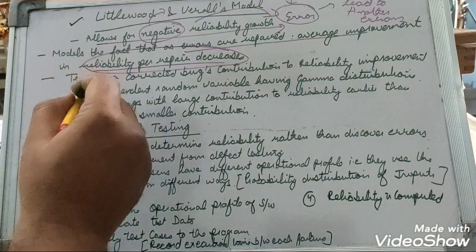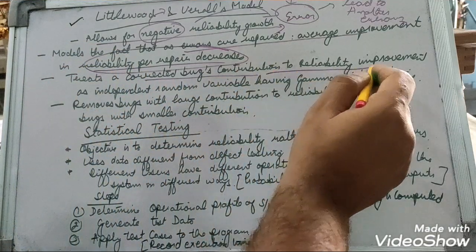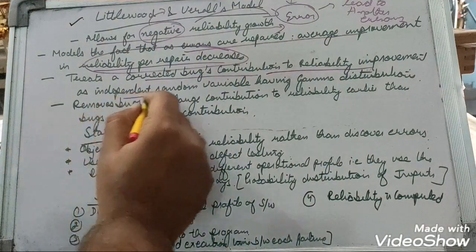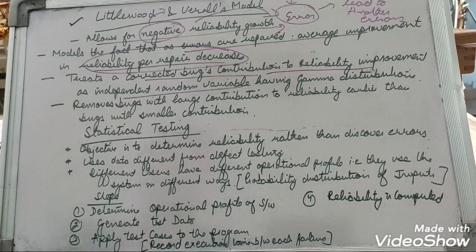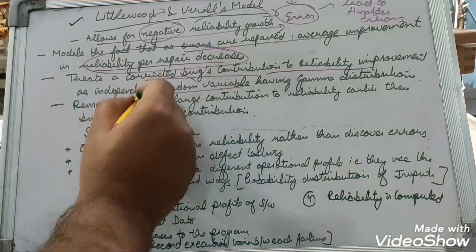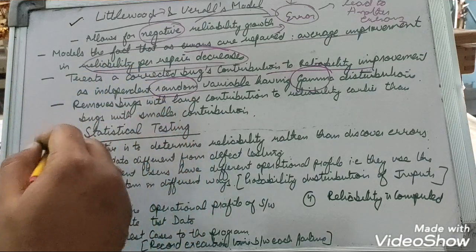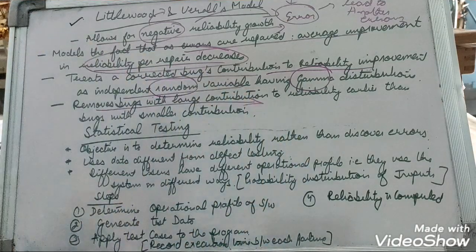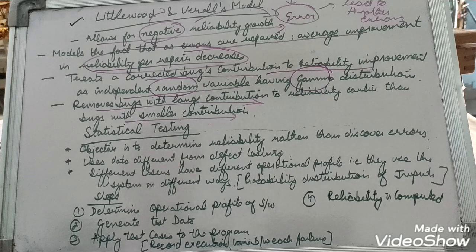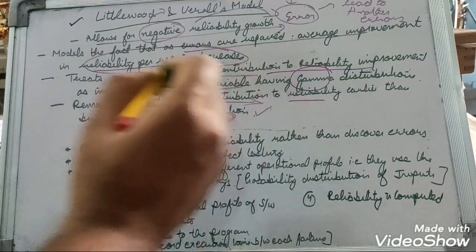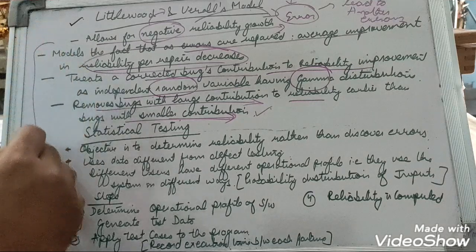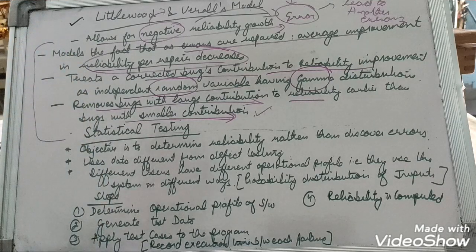The Littlewood and Virall model treats a corrected bug's contribution to reliability improvement as an independent random variable following a gamma distribution. It removes errors with large contributions to reliability first, compared to bugs with smaller contributions. The error which relates to a higher increase in reliability growth is removed first.